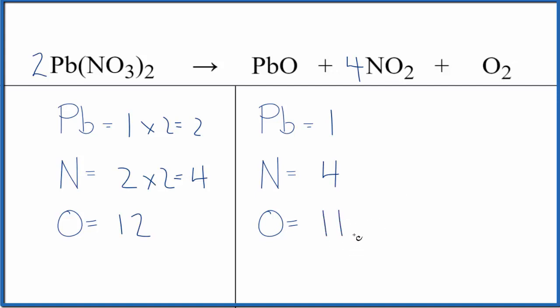We're almost there. If we put a 2 in front of the PbO, the lead 2 oxide, 1 times 2 gives us 2 lead atoms. Those are balanced. We need to update the oxygens again. 1 times 2 is 2, plus 2 times 4 is 8, plus 2 gives us 12. We are done. This equation is balanced.